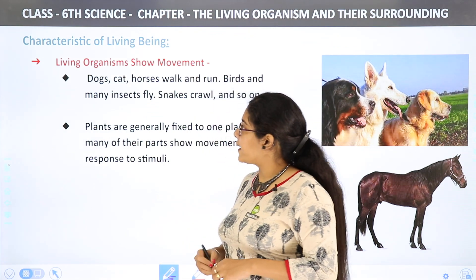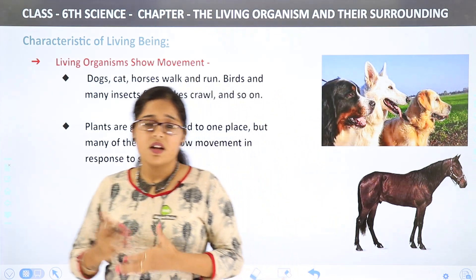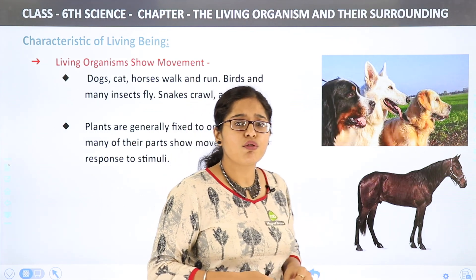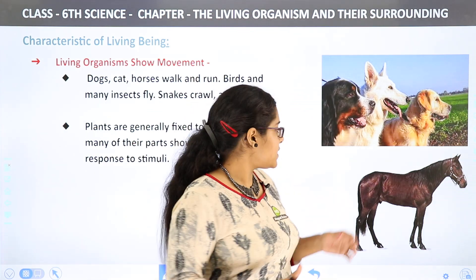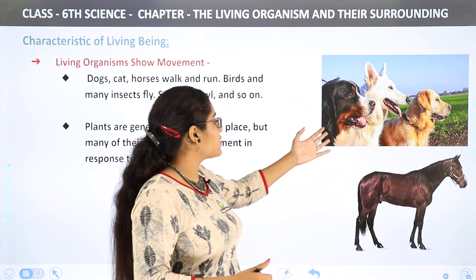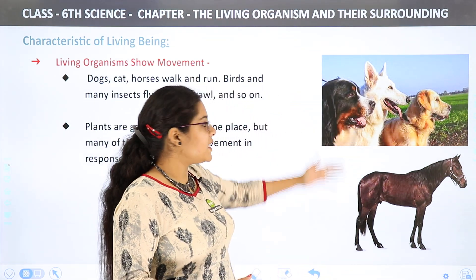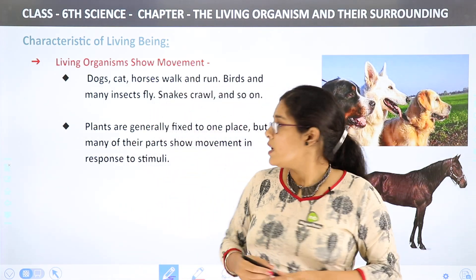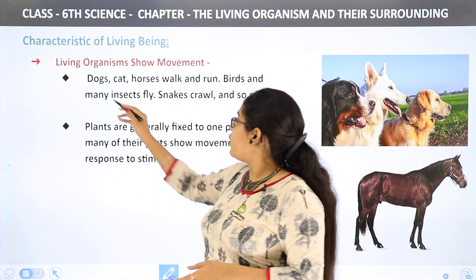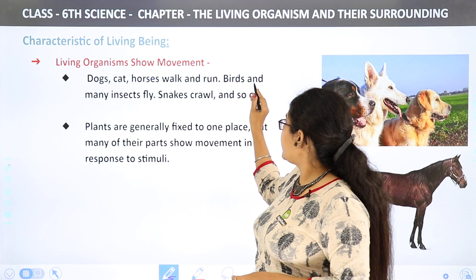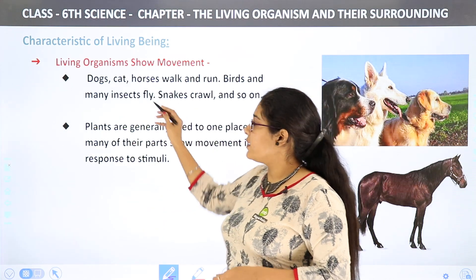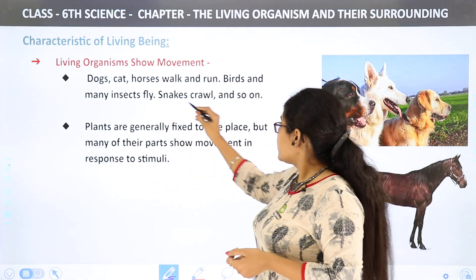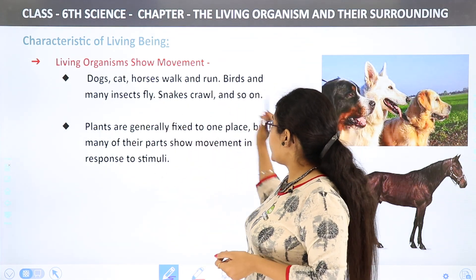Living organisms show movement. I am a living organism and I can move. You can see a horse and dogs over here — all of these move. Dogs, cats, and horses walk and run. Birds and insects fly. Snakes crawl. So living organisms move.